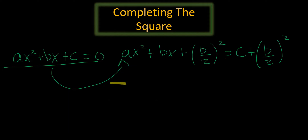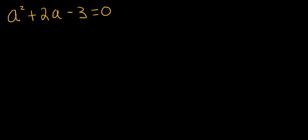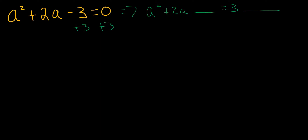Let's work through an example. In this first example, we have a² + 2a - 3 = 0. The first thing we want to do is rewrite this into our neater form. We have to add 3 to both sides. So this equation becomes a² + 2a [blank] = 3 [blank].